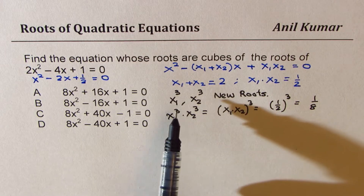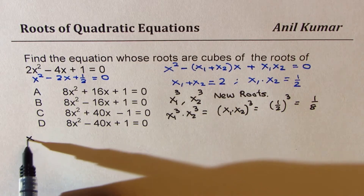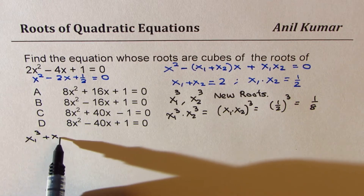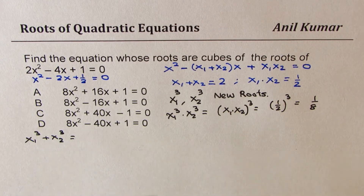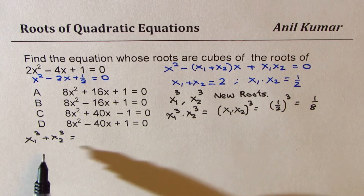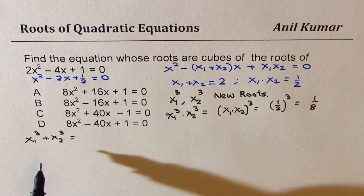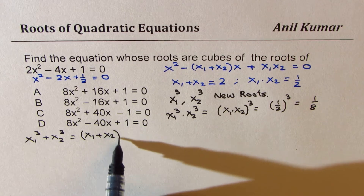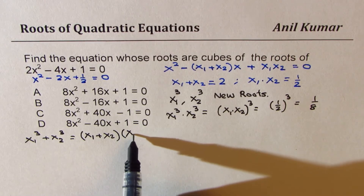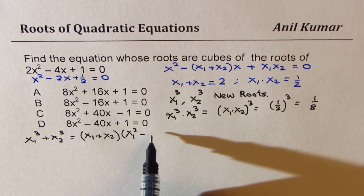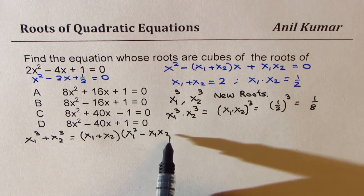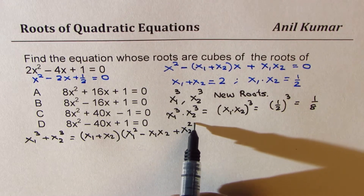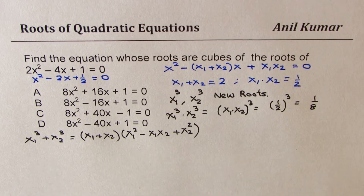Now, how do we find the sum of cubes? That is to say, x1 cubed plus x2 cubed. We go back to factoring: we can write this as (x1 plus x2) times (x1 squared minus x1 x2 plus x2 squared). That is the sum of cubes expansion.